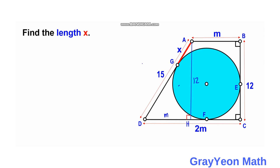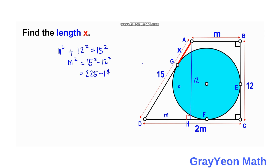We focus on triangle AHD. The hypotenuse is 15, one leg is M, and one leg is 12 units. By the Pythagorean theorem: M² + 12² = 15², so M² = 225 − 144 = 81. Taking the square root of both sides, M = 9 units.